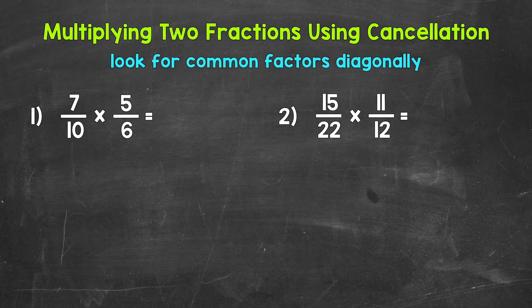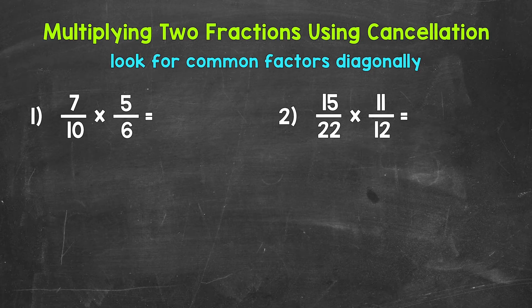Cancellation is a way to simplify a problem before we multiply. When we multiply fractions, we multiply straight across — multiply the numerators, the top numbers, and then multiply the denominators, the bottom numbers. We use cancellation before we multiply straight across. This strategy gives us smaller, easier numbers to work with.